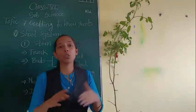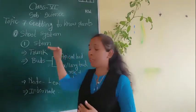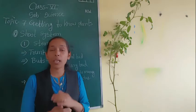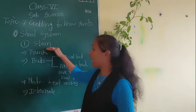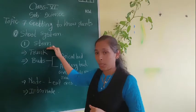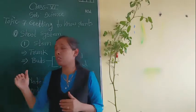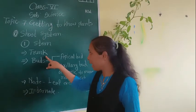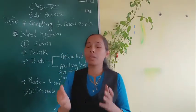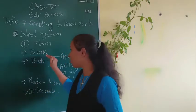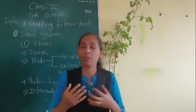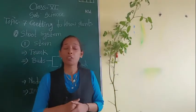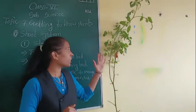Today we will start with the first part of the shoot system, that is the stem. The stem is the main part of the plant — the portion which is above the ground. In most plants the stem is very hard, thick, and strong. In big trees, these stems are called the tree trunk, and the tree trunk has a tough, rough covering called the tree bark, which protects the inner lining of the tree.